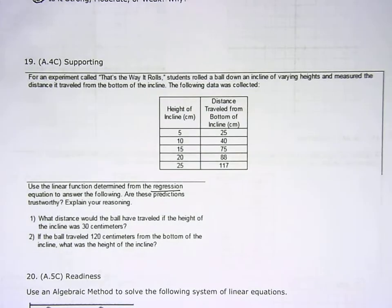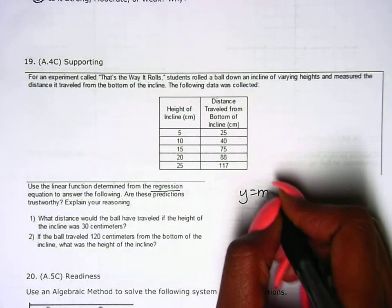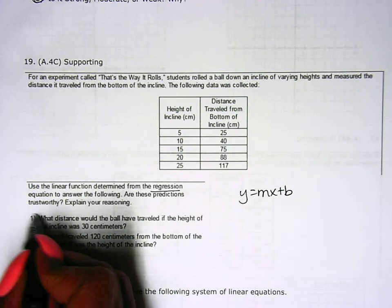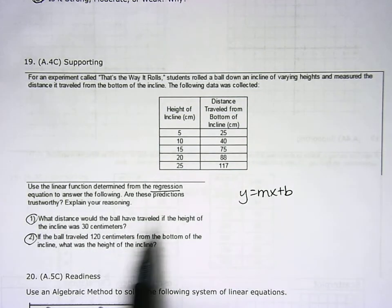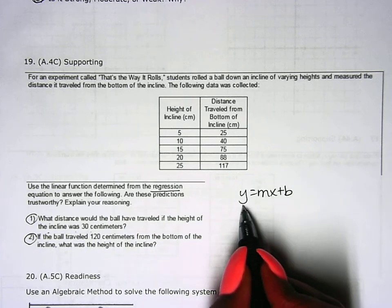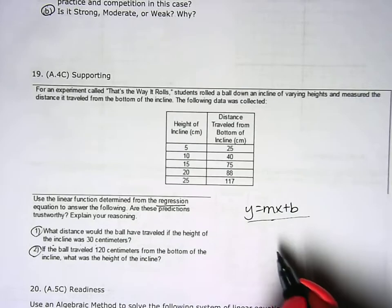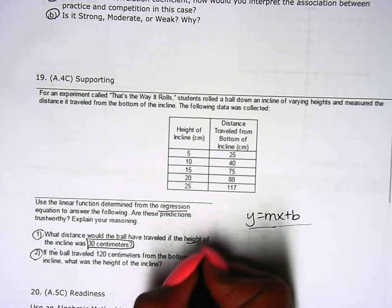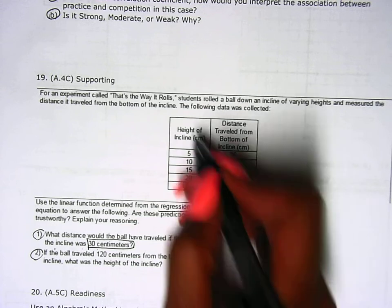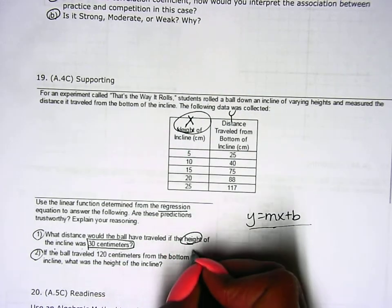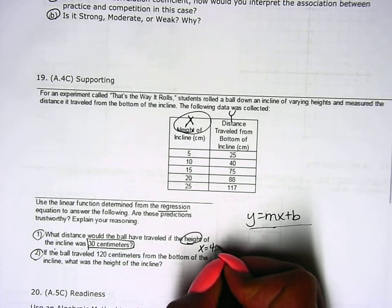After you get your equation, write it in y equals mx plus b form. Then you're going to answer numbers one and two. What distance would the ball have traveled if the height was 30 centimeters? Well, if the calculator has already given you your equation, all you have to do is recognize what am I going to plug in 30 for? It's telling you height, and in our problem height is represented by x. So on this first problem you're going to plug in 30 for x.